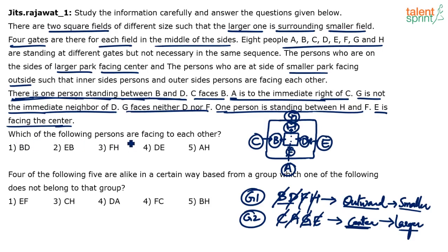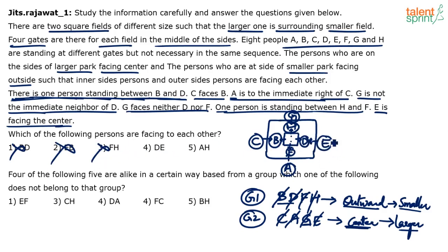It would not take more than 3 minutes to complete this arrangement, and then you get 5 marks. Question 1: Which of the following persons are facing each other? B and D? No. B and C are facing each other. E and B? No. F and H? No — F and A are facing each other. D and E? Yes — D and E are facing each other. A and H is also eliminated. So D is the answer.